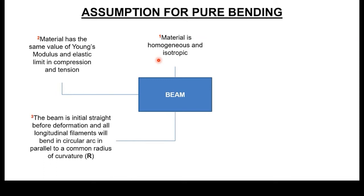We also assume that if you were to slice the beam along its longitudinal plane, when the beam bends, the layers or filaments that constitute the beam will be parallel to the neutral axis. When the neutral axis is bent, that defines what's called the radius of curvature — because when it bends, you get an arc and that arc will have some form of radii.